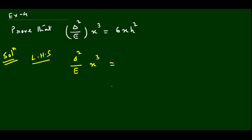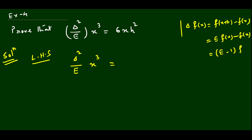We have the relation delta = E − 1, because delta f(x) = f(x+h) − f(x) = E f(x) − f(x) = (E−1) f(x). So in place of delta² / E, we write (E−1)² / E · x³.